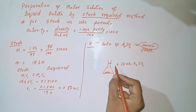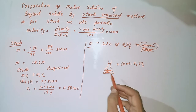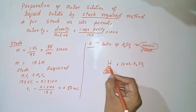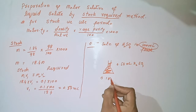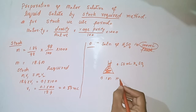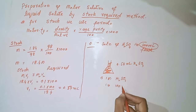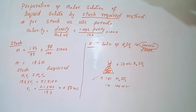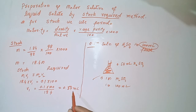Then we will add a small amount of solvent water into it and shake the flask. After that, we will add water up to the mark. We can now call this a 0.1 molar H₂SO₄ solution in 100 ml. To prepare it, we take a volume of 0.54 ml from the stock bottle.